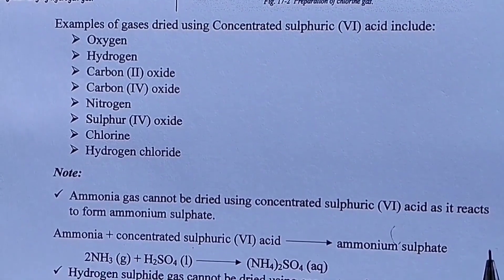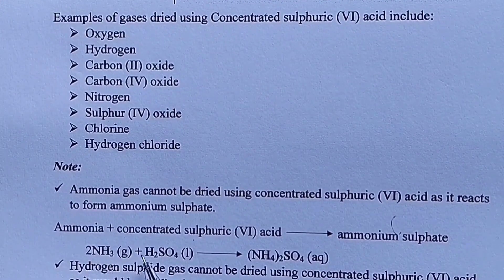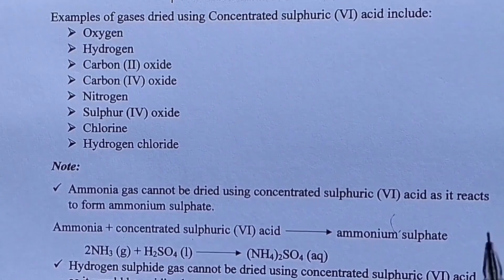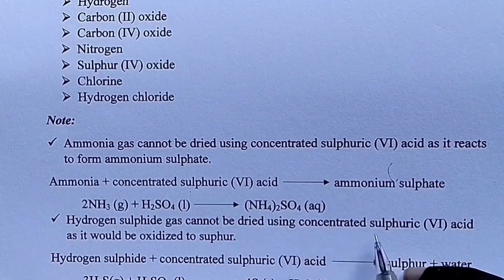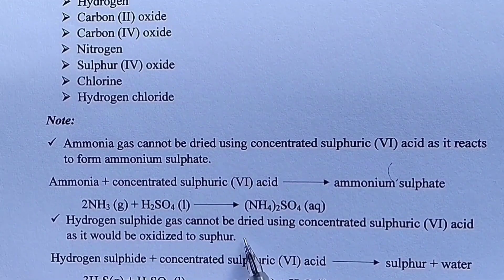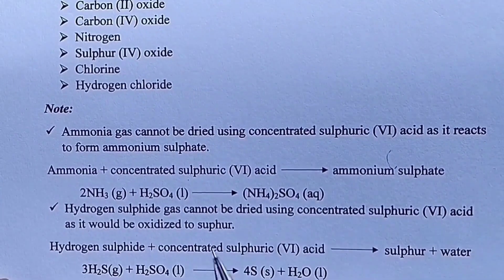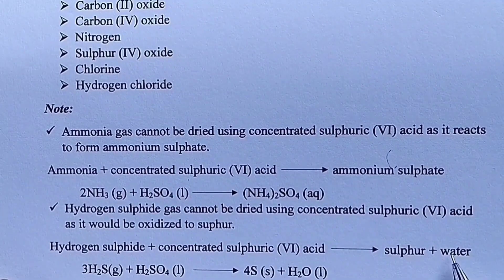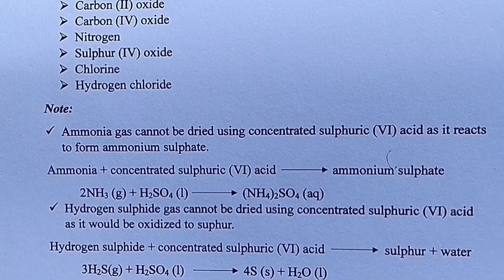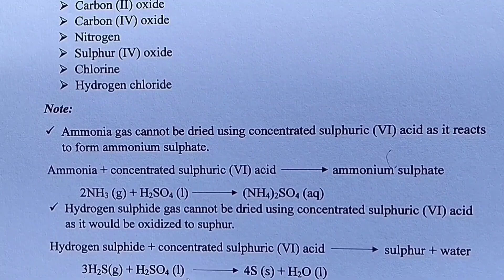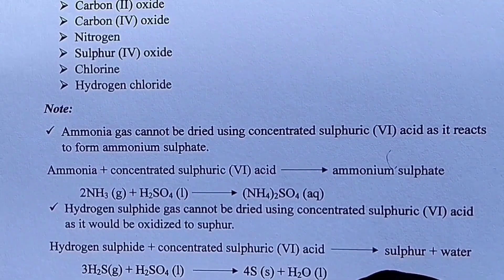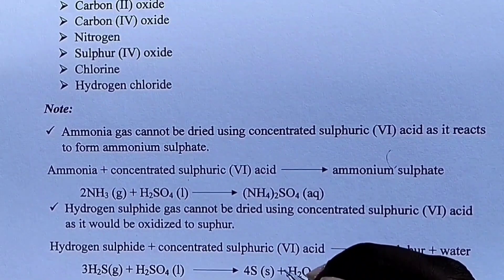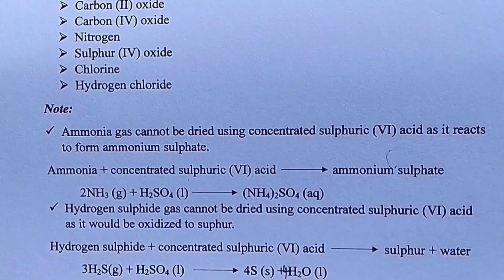Also, hydrogen sulfide gas cannot be dried using concentrated sulfuric acid as it will be oxidized to sulfur. The balanced chemical equation is: 3H₂S + H₂SO₄ → 4S + 4H₂O. That is how we balance that equation.